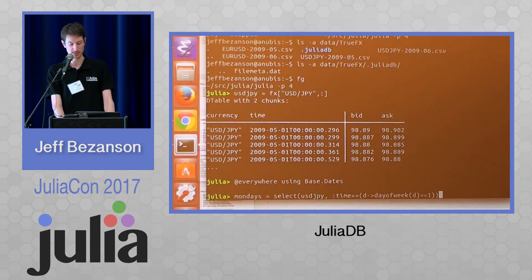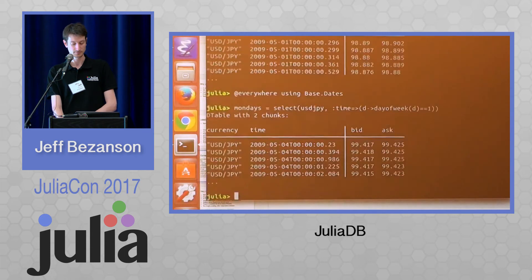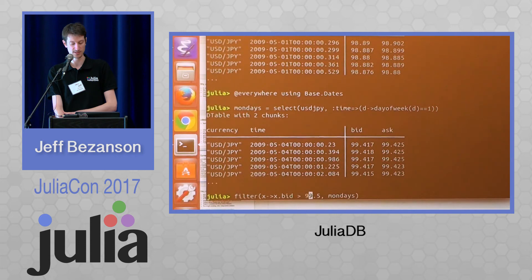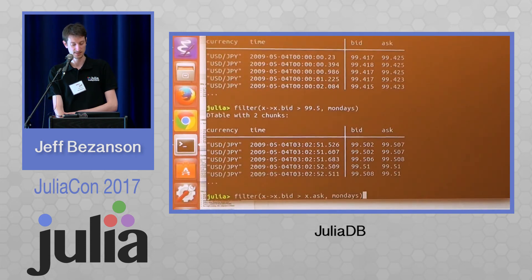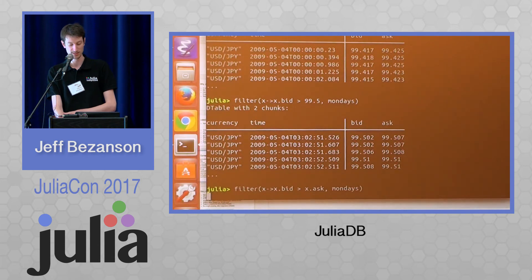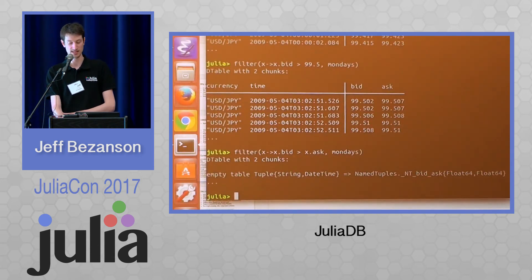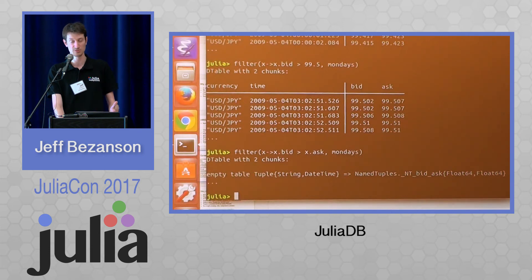I can do a few more common filtering operations. I can `select` from that everything where the time has a day of week equal to one — so that gives me the Mondays. Then I can filter for bid price anywhere the price of a dollar is over 99.5 on a Monday. As a sanity check, I can see if there's anywhere the bid price is bigger than the ask price, which should never be true — and indeed, it comes back as an empty table. These are very simple data operations so far, but they're running in parallel and pretty scalable. We did this on the full version of this dataset which was about 4 billion rows.